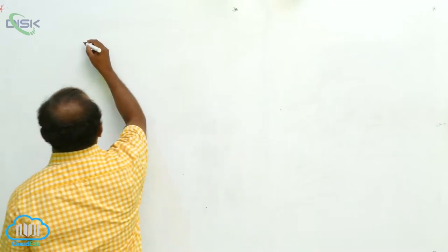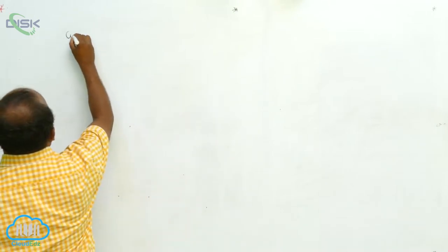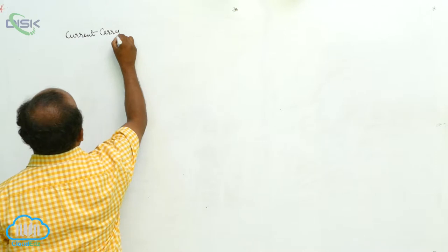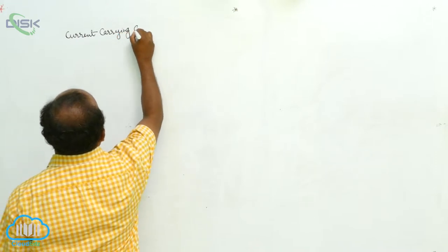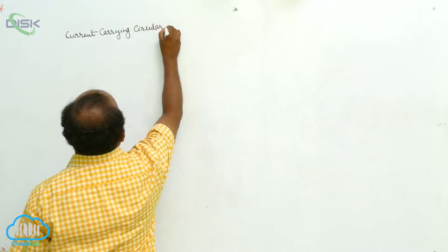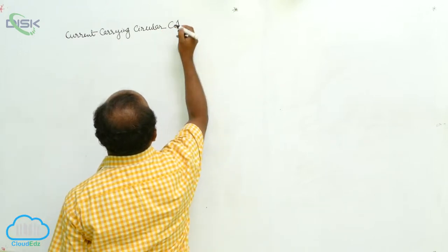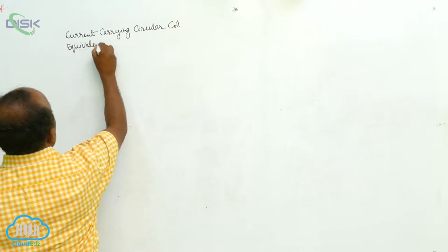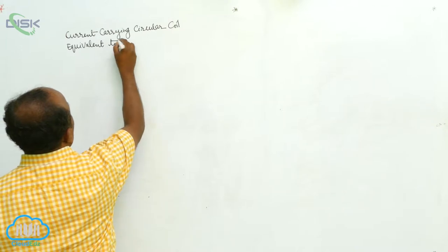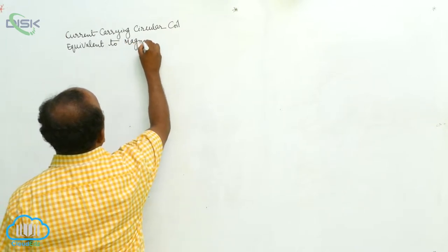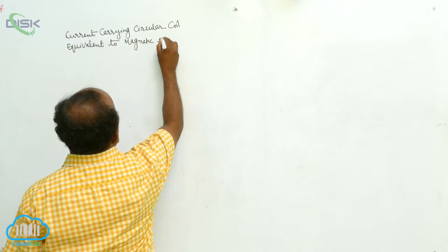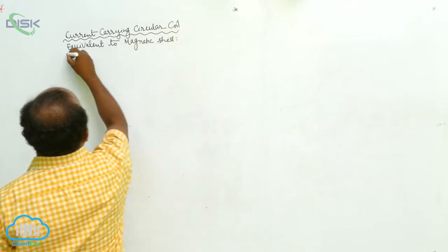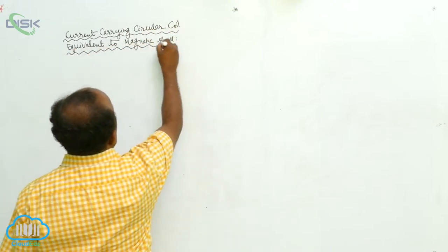A current carrying circular coil is equivalent to a magnetic shell.